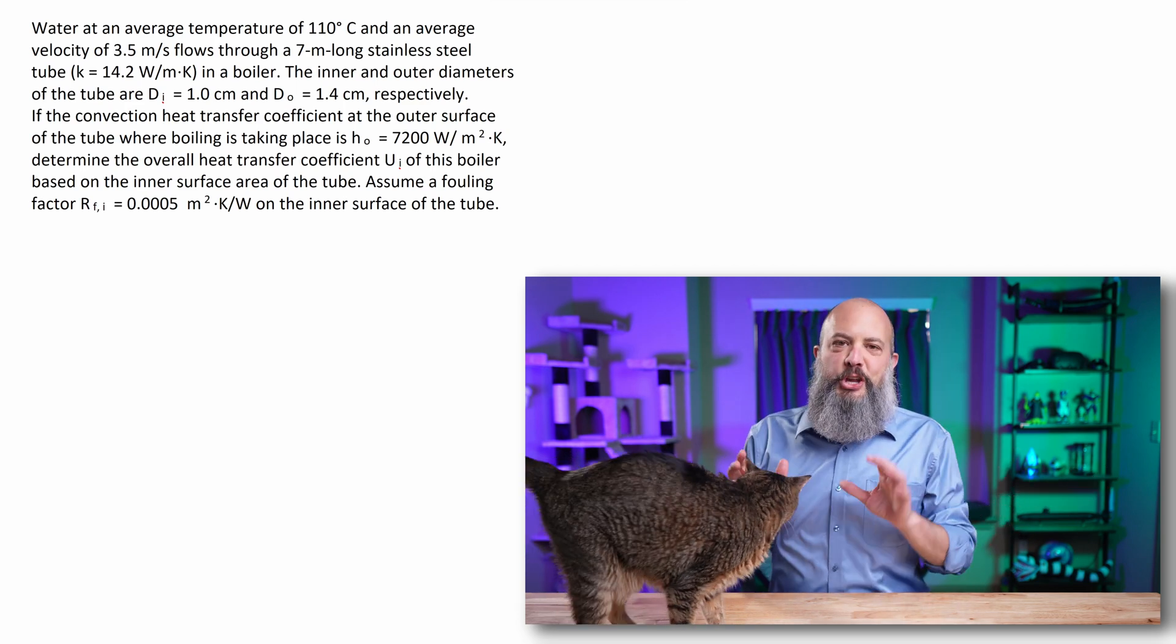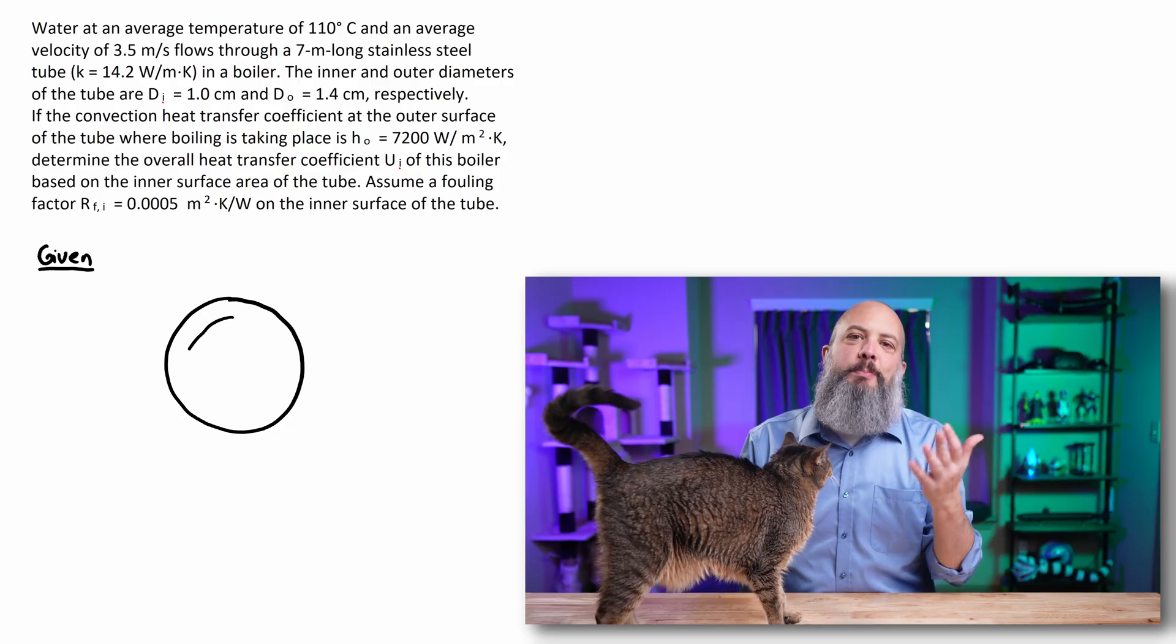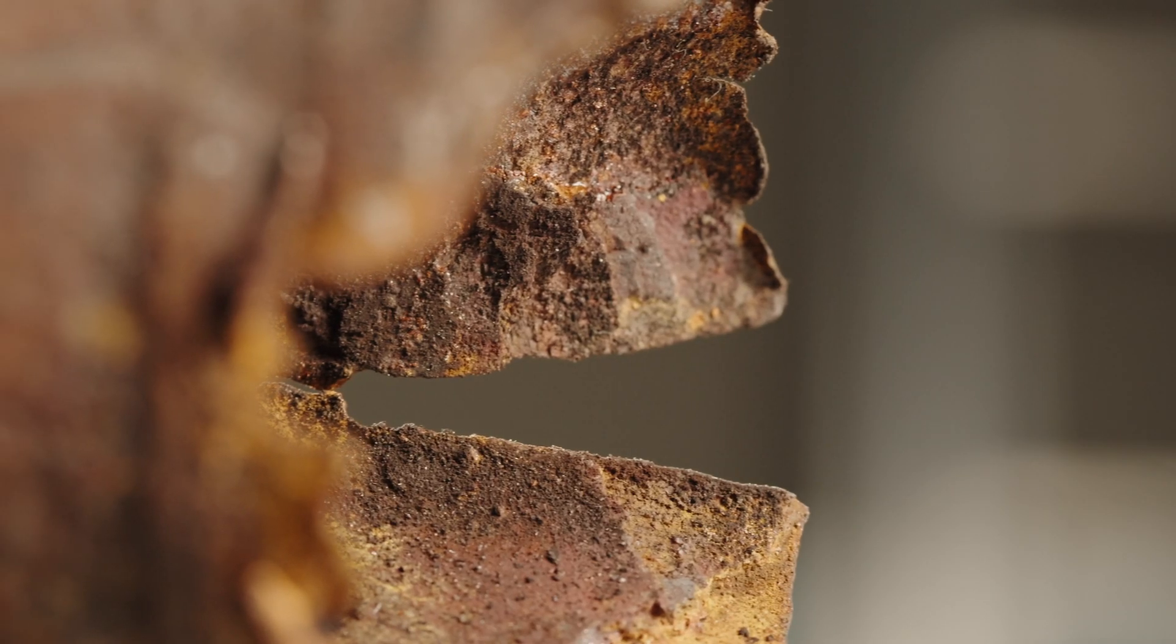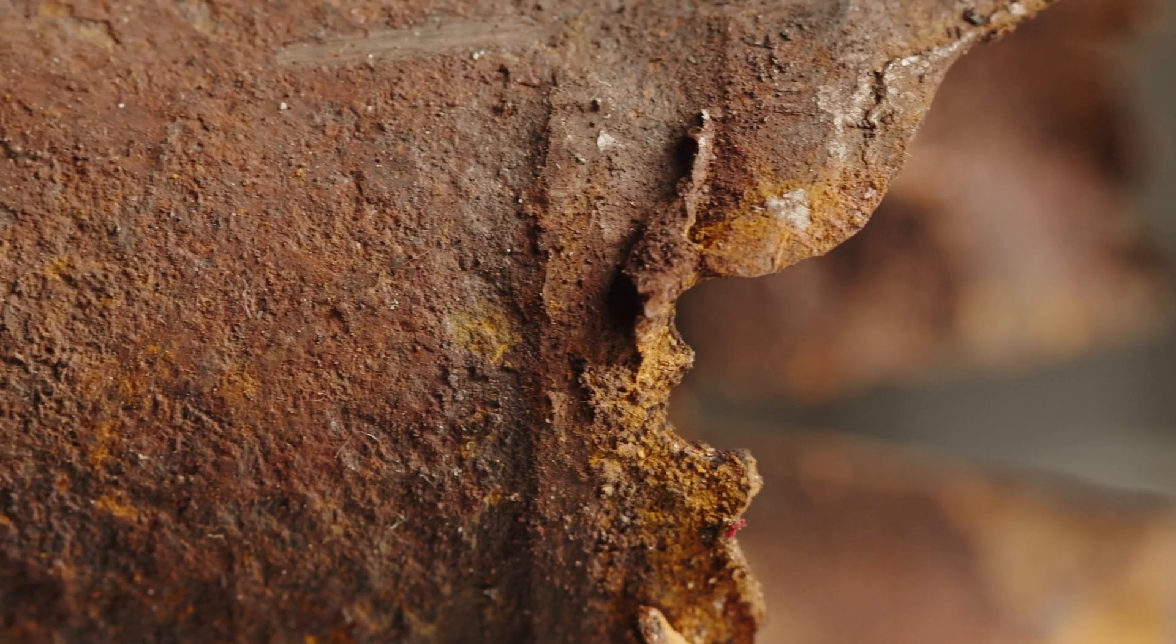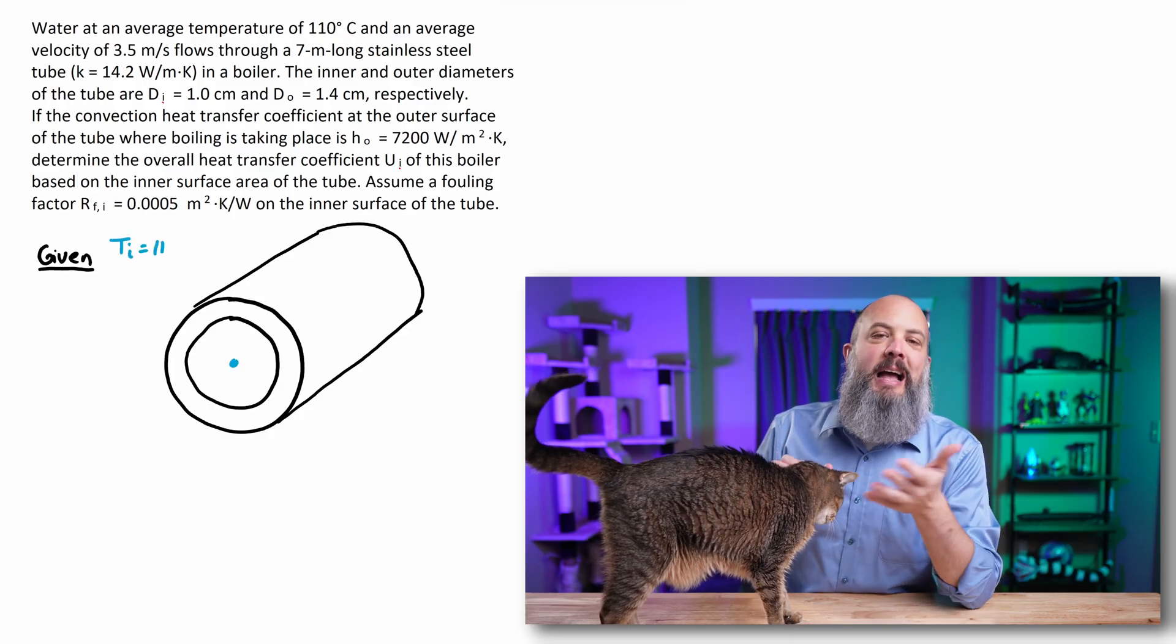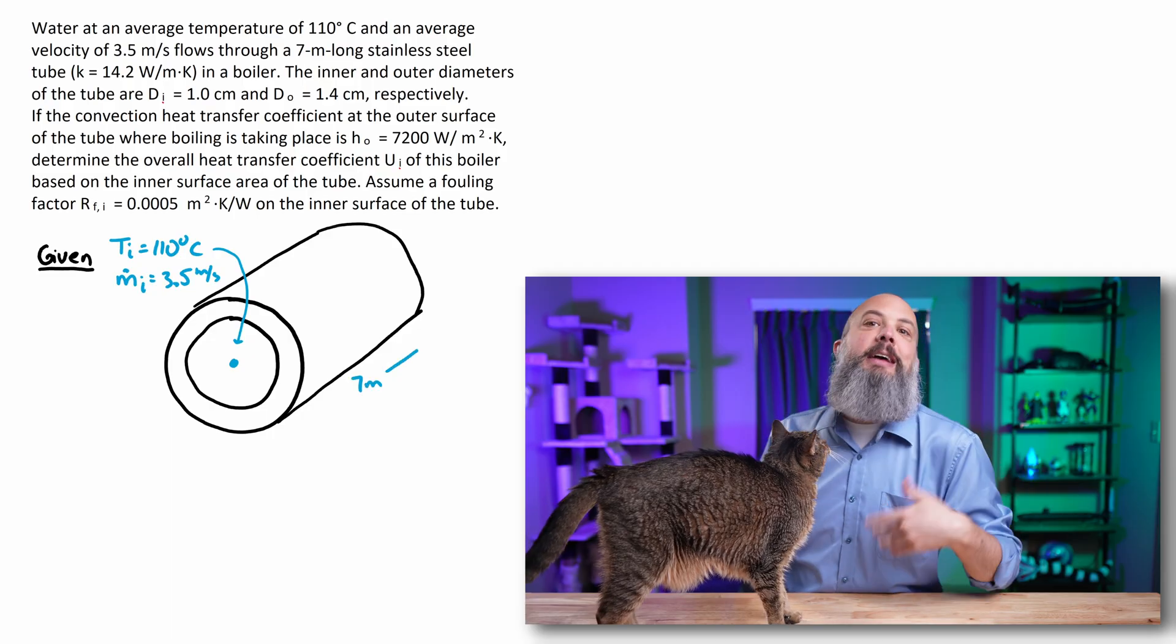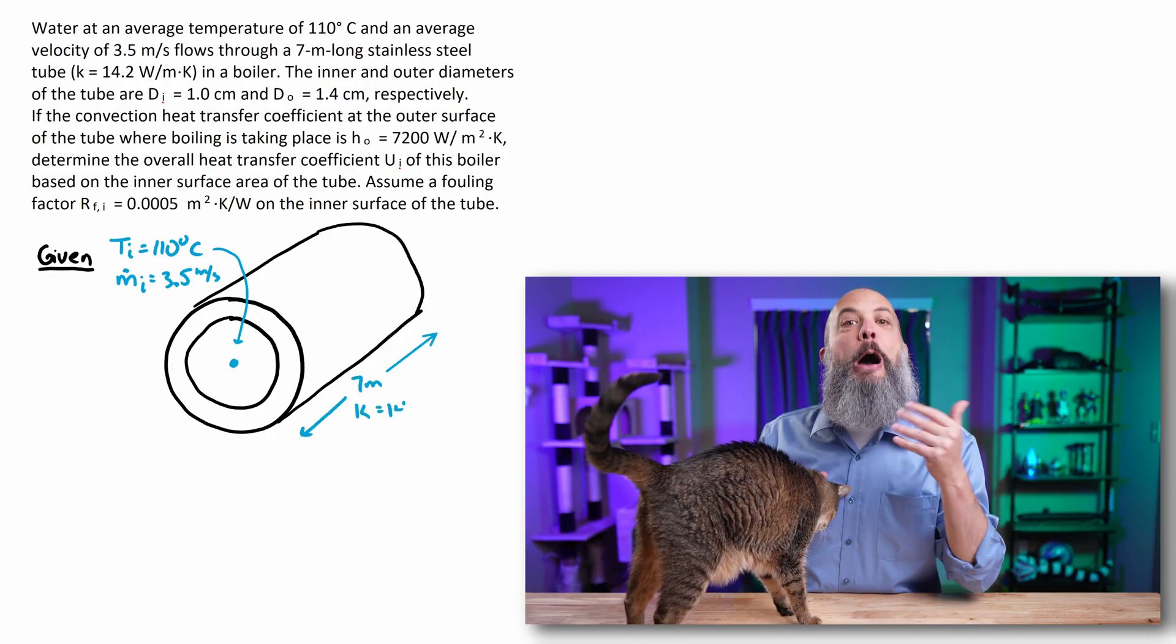Fouling is all of the gunk that builds up on the inside or outside of a pipe, which over time reduces the heat transfer coefficient, basically adds extra thermal resistance to your system and makes heat transfer worse. This example problem is going to be our attempt to quantify how much worse the heat transfer is going to be for a system as a result of all this gunk buildup that is fouling.